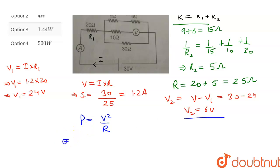So let's substitute that value. This will give us P is equal to 6 square divided by 9. This comes out to be 4 watt.